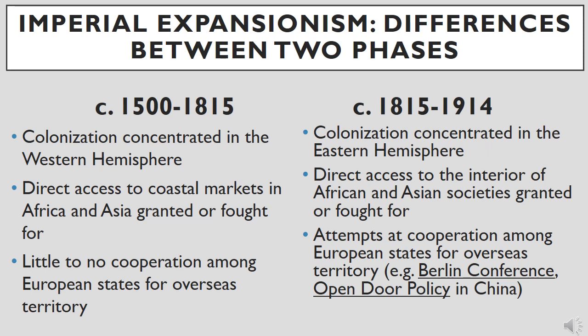Due to so much of the Western Hemispheric societies having gained their political independence during the age of revolution prior to 1815, the Eastern Hemisphere was about all that was left for these expansionist states to take. Beyond the desire for mere access to coastal markets, in the age of imperialism the desire was to gain direct access into the interior of African and Asian societies, even if it meant militarily defeating established states. An us-versus-them mentality emerged, allowing imperialist nations to cooperate in picking apart vulnerable lesser-developed Eastern Hemispheric societies — seen in the Berlin Conference regarding Africa and the Open Door Policy regarding China.